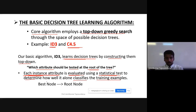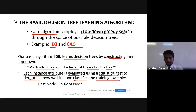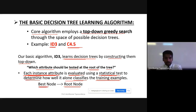The test for selecting the root evaluates each instance attribute using a statistical test — determining whether that individual instance attribute is able to classify the whole training example set. If that attribute is able to do so, we select it as the best node, and that best node is assigned as our root node.